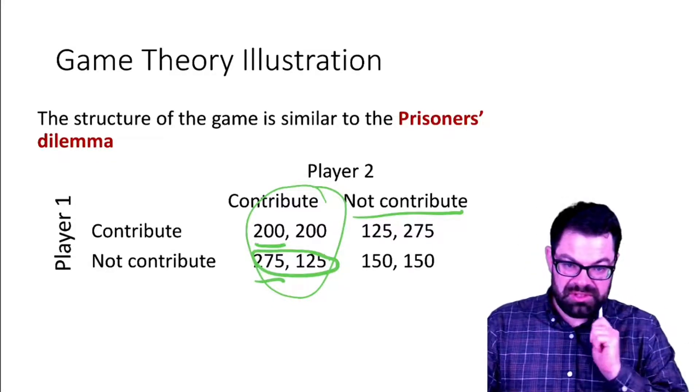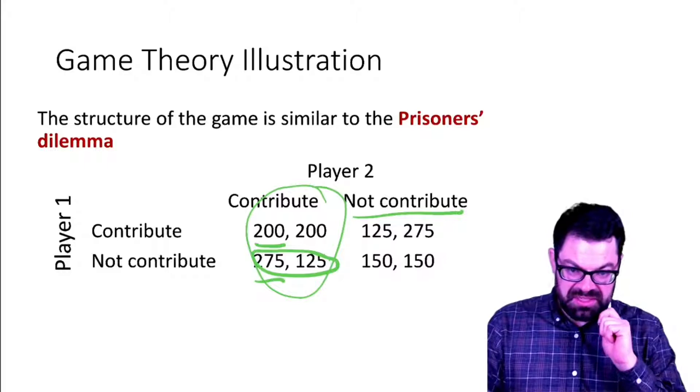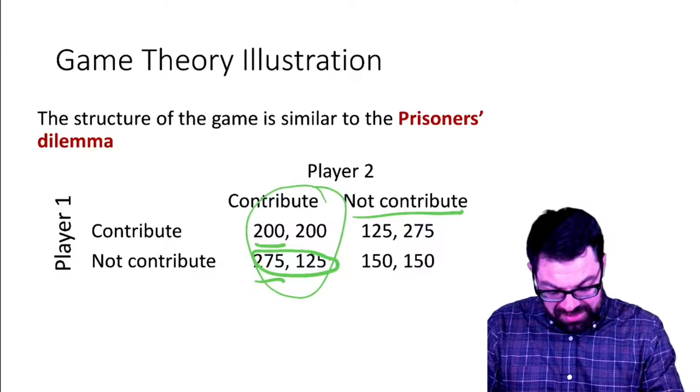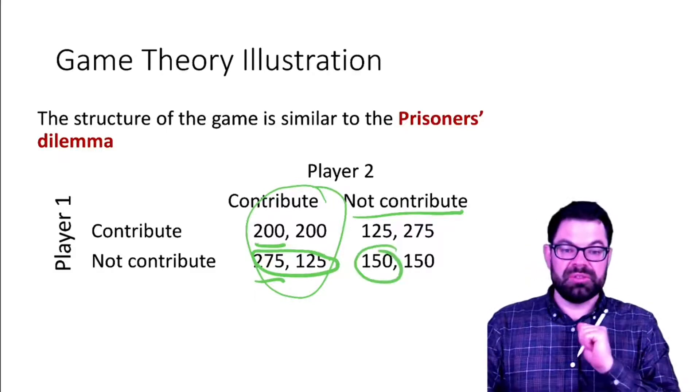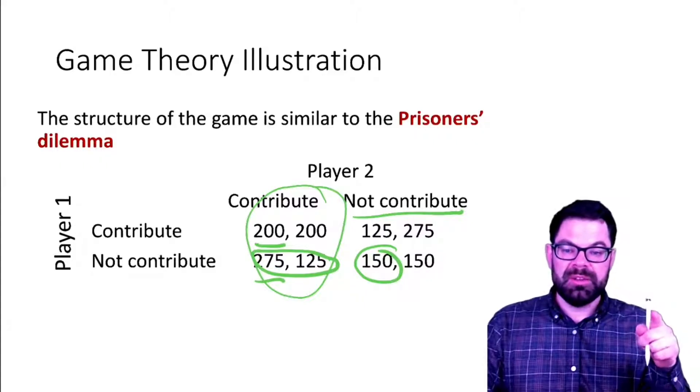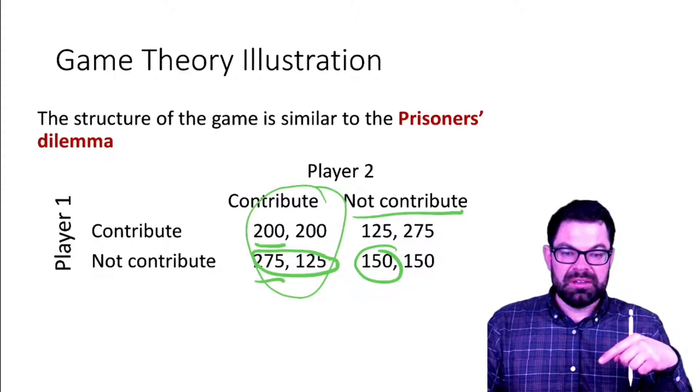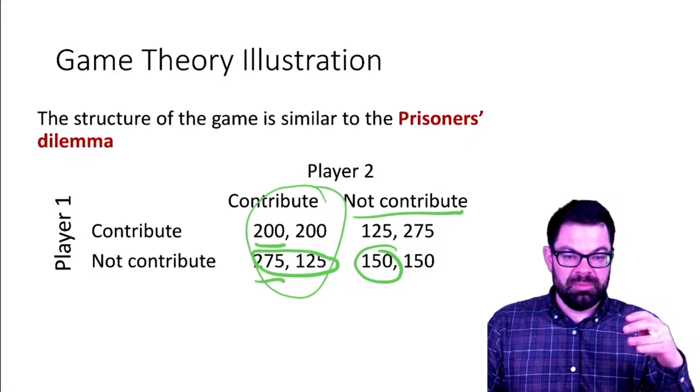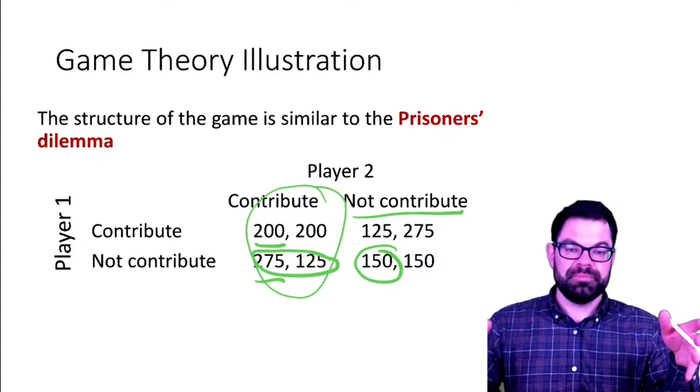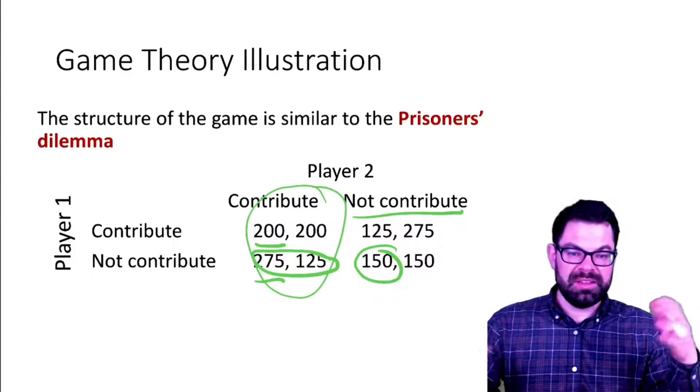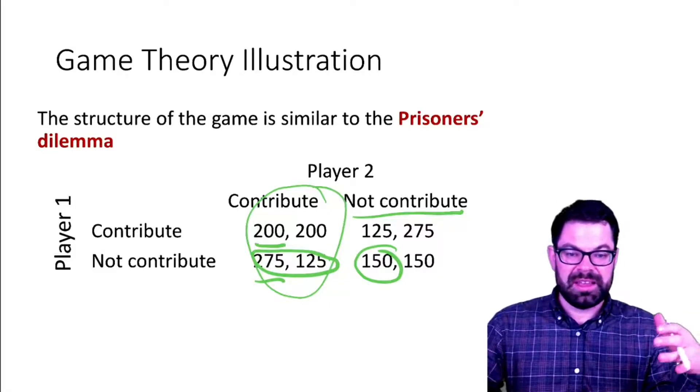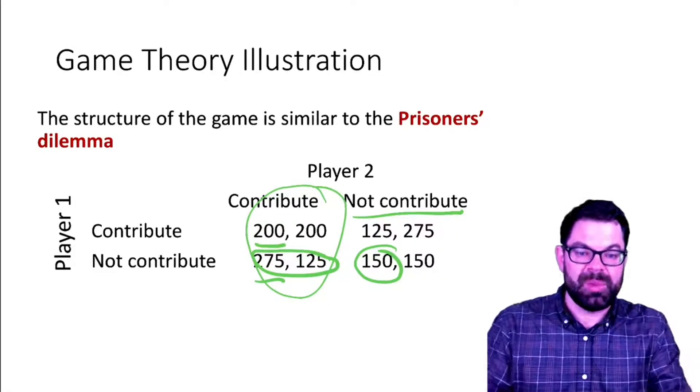If player two is not contributing, what is my best action then? My best action is also not to contribute because if I do contribute I get 125. But if I don't contribute, both of us just spend all our money on the private good. If I contribute and the other person doesn't, then the other person free rides and I only get 125 because I spend all my money on the public good.